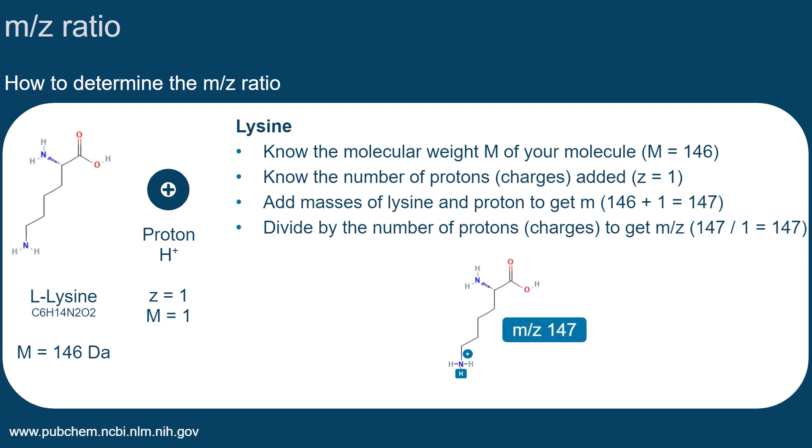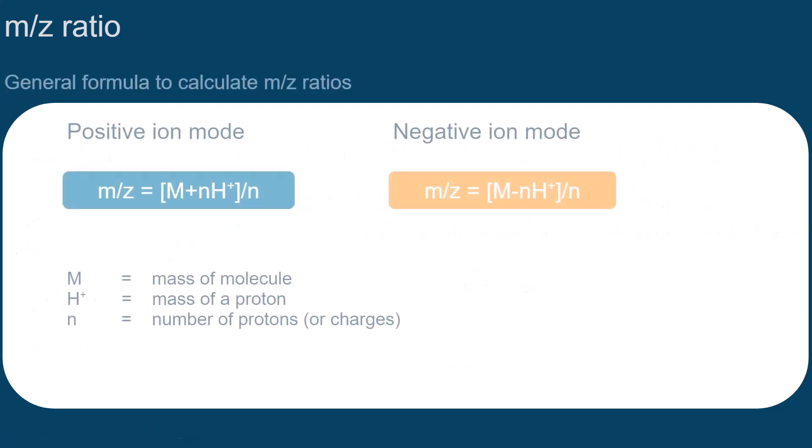This results in an M over Z value of 147. This is the general formula to calculate M over Z ratios for positively and negatively charged ions. Always take the number of protons into account that are added to or subtracted from the molecule.